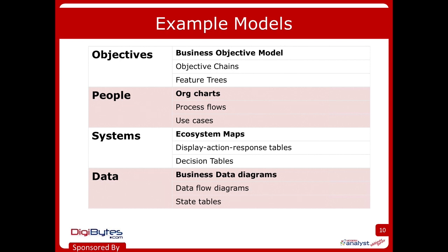You'll notice that in each of these categories, the top model is actually bolded. The reason for that is those particular models actually help us bound the problem space. For example, if I use org charts to identify all the stakeholders of my project, and I can get a complete org chart for my whole organization, then I know that I am not missing any stakeholders because they're somewhere in that org chart. Those are bounding models to make sure that we know the full scope boundary of the thing we're trying to analyze.